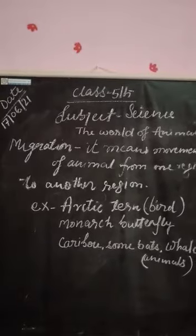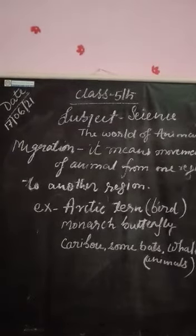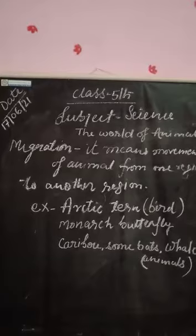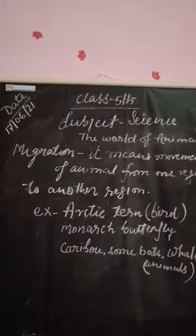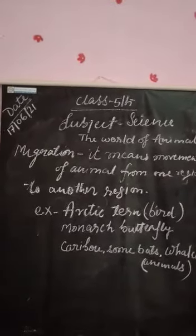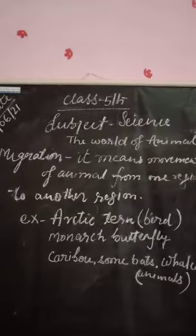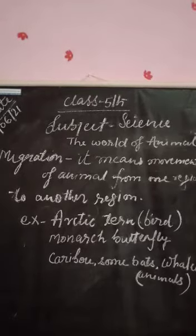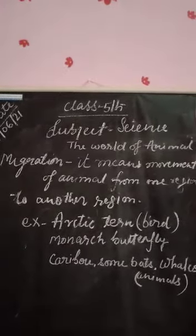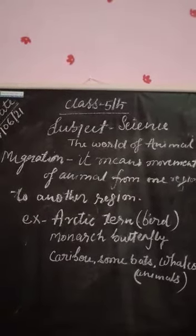कुछ समय देखा गया है कि some animals migrate because of natural climate changes. जैसे earthquake आ गया, सूखा पड़ गया — तभी ये जन्तु अपना स्थान परिवर्तन कर देते हैं। और जब स्थिति सामान्य होती है तो वे अपने मूल स्थान पर वापस चले आते हैं।